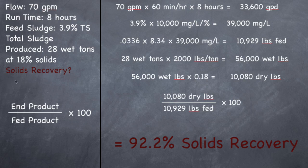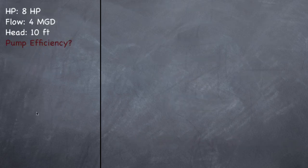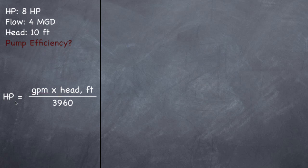And that's solids recovery for a belt press. Last problem: pump efficiency. We have an 8 horsepower pump pumping 4 MGD against 10 feet of head — it's pushing water up 10 feet. They want to know how efficient this pump is. There are two formulas: to find horsepower, you need gallons per minute times head in feet divided by 3960.